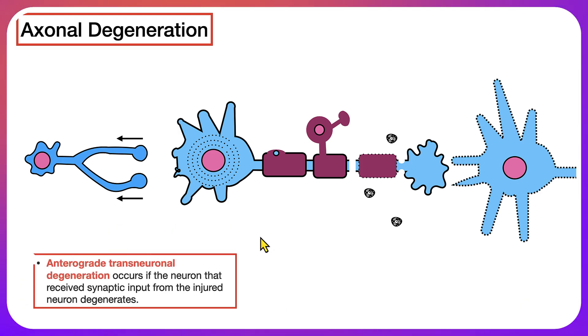The other type is going to be anterograde transneuronal degeneration. This is going to occur if the neuron that received synaptic input from the injured cell degenerates. So that is the process of axonal degeneration.